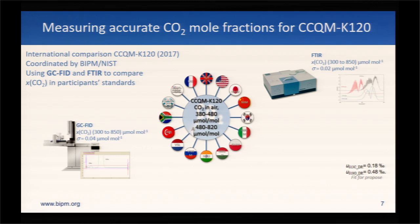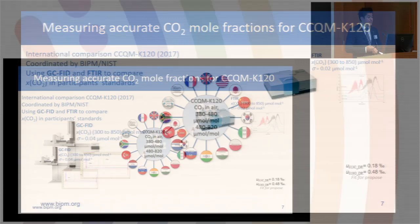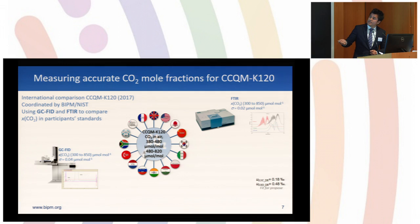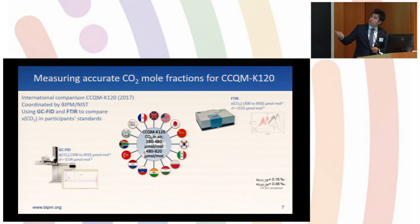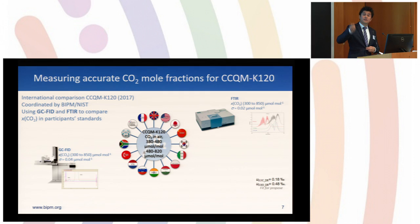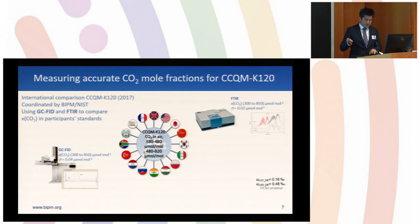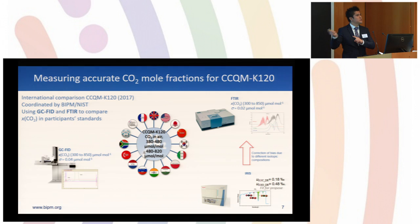Now let me say a few words about the comparison we organized last year. We use a GCFID that is not sensitive to pressure broadening effects or isotopic compositions of the mixtures of CO2, and then we use an FTIR at the same time. More and more laboratories around the world are using these optical systems, so it's very important for everyone to know which are the potential sources of bias. To correct the mismatch between the isotopic composition of each cylinder, we use a delta ray to get the delta value and then correct the FTIR values.